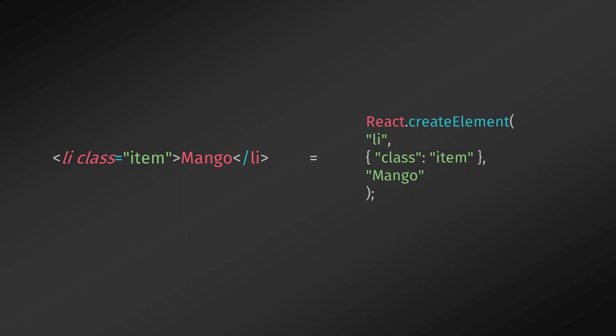HTML attributes and React component properties work similarly to the attribute syntax in HTML. If you need to pass properties, write them in JSX as you would in normal HTML. You also render standard HTML attributes by setting element properties. Let's consider the following example.